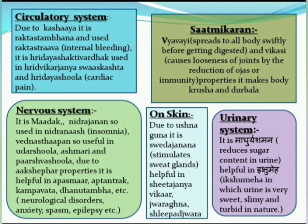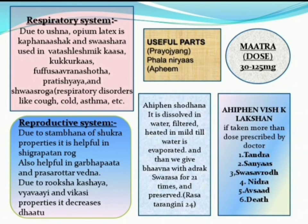On skin, due to ushna guna it is svedajanan — it stimulates sweat glands — so it is helpful in svedajanan-related vikara, jvara, and shlipad jvara. On the urinary system, due to madurisha (diuretic) properties, it is helpful in kshauma — the urine output content increases and urine gains turbidity. On the respiratory system, due to ushna guna properties it is kaphana shak and shvasahara; it is used in vataja shvasanikasa, kukurkasha, phupphusa shotha, pratishyaya, and shvasa roga. On the reproductive system, due to shukra-stambhana properties it is helpful in shukrapatan roga, garbhapata, and prasavottara vedana. Due to Ruksha, Kashaaya, Vyavayi, and Vikasi properties it decreases dhatu — that is, dhatu kshaya.